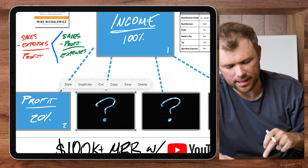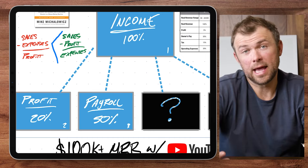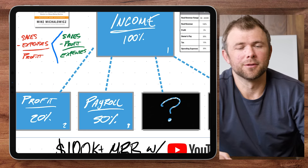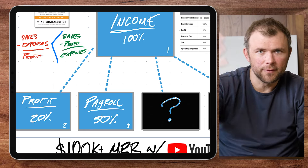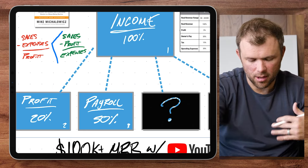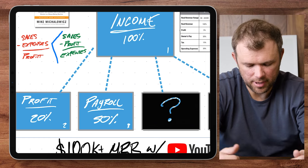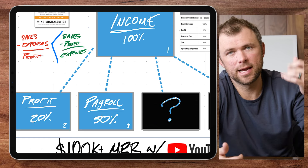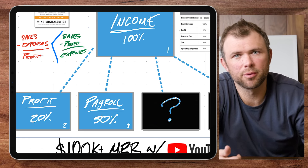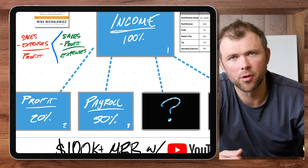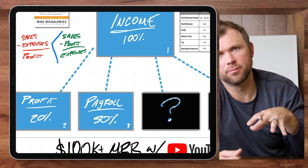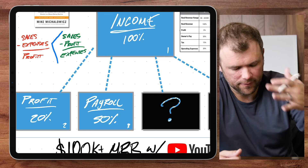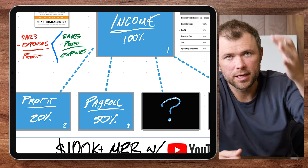The second account you need is a payroll account. This is how you pay yourself and your team — it all goes into a payroll account. Let's say maybe 50% of your income gets put into there, so that flows to your profit and it flows to your payroll.